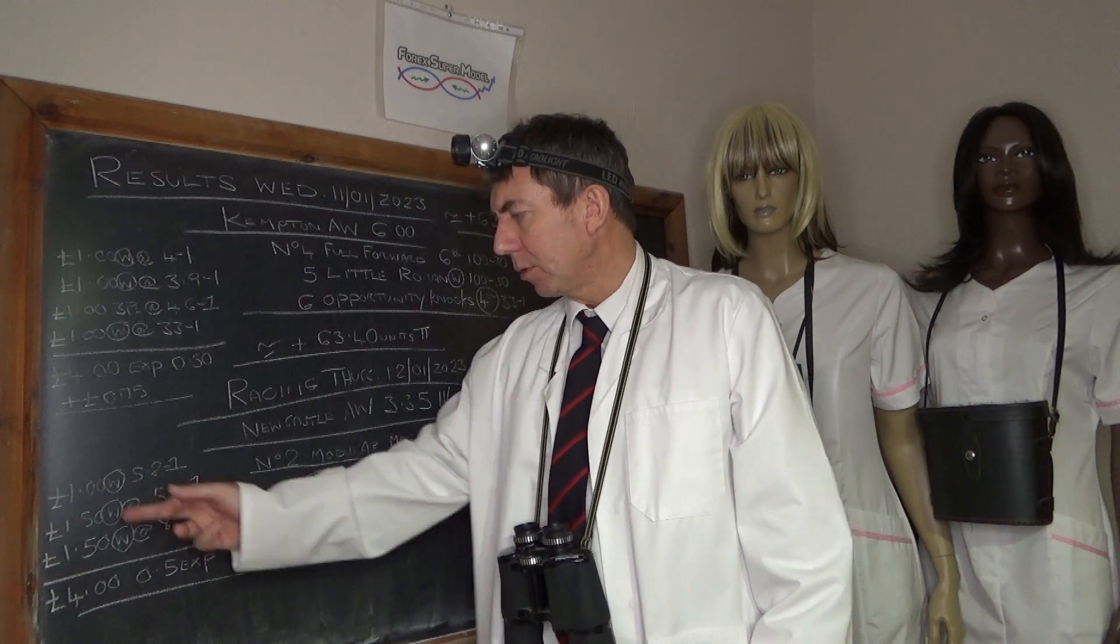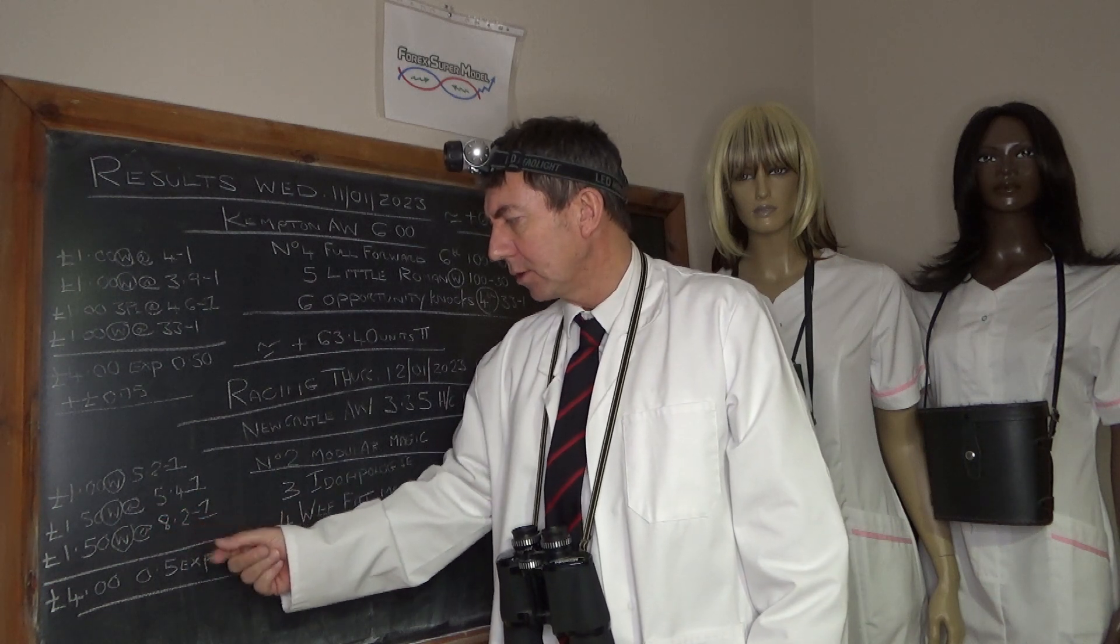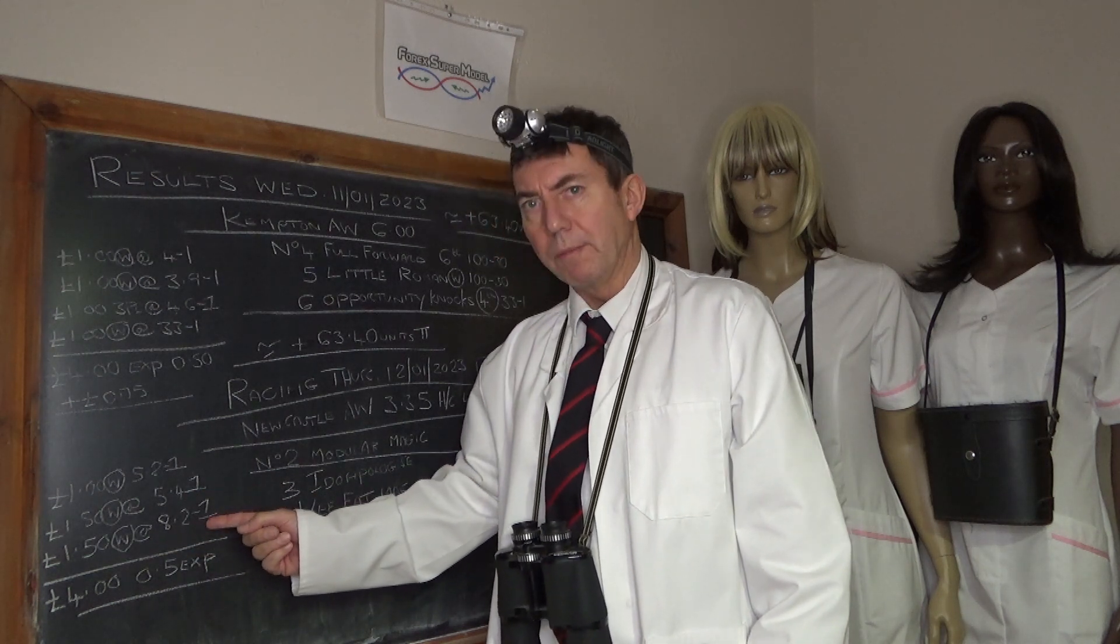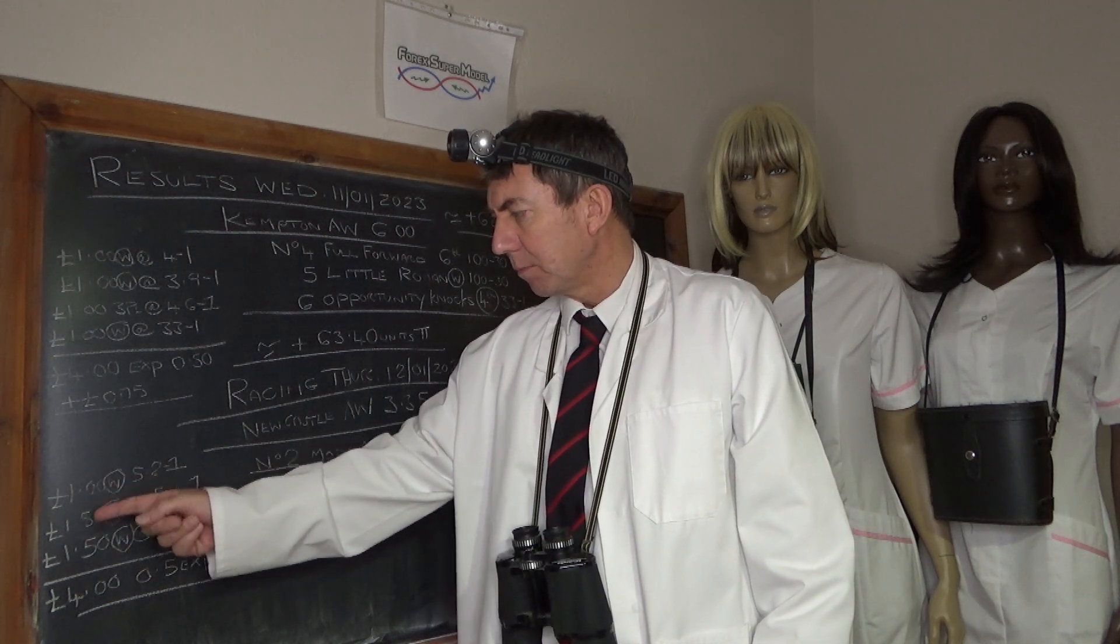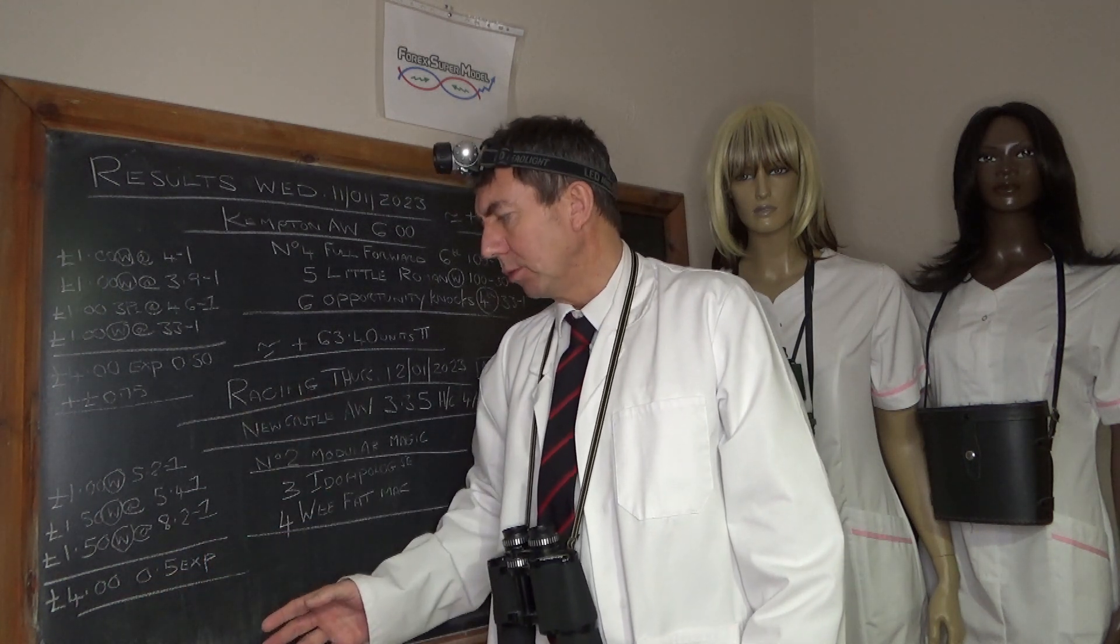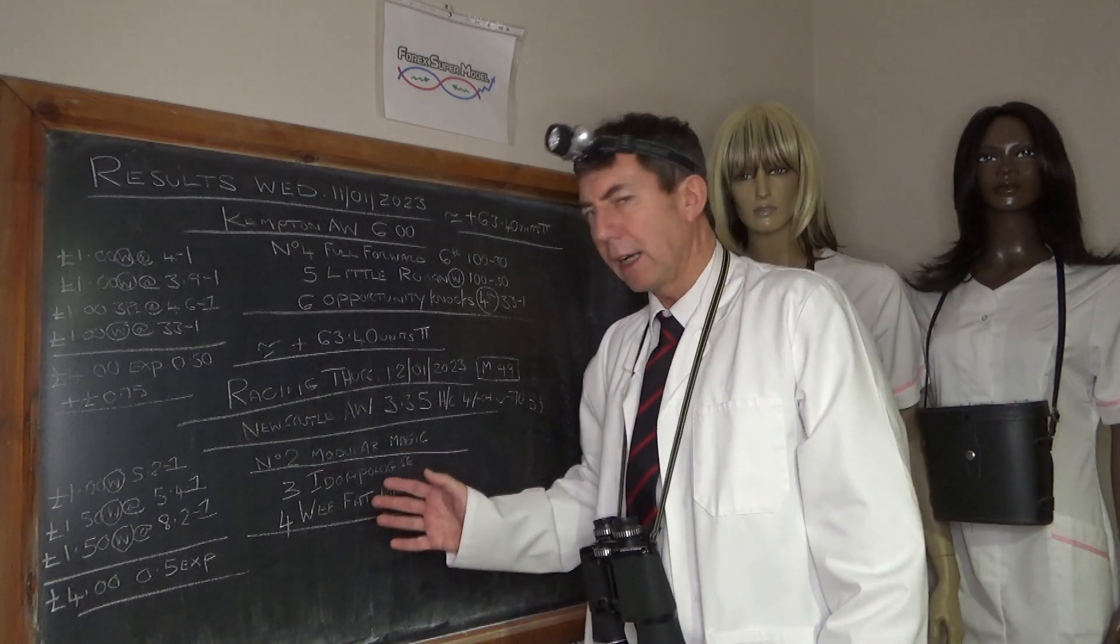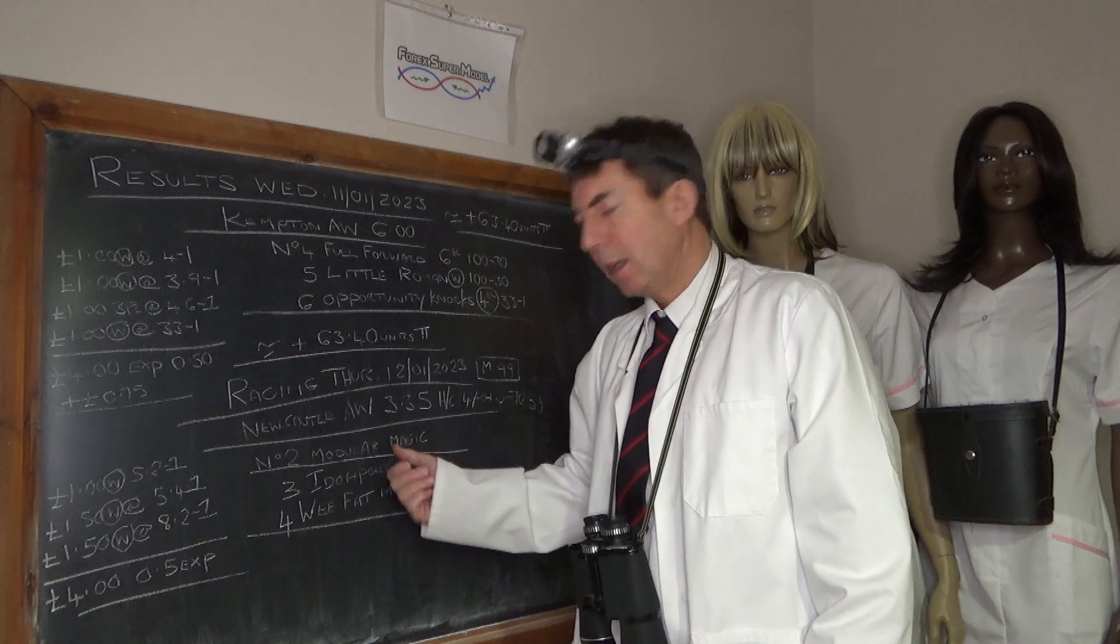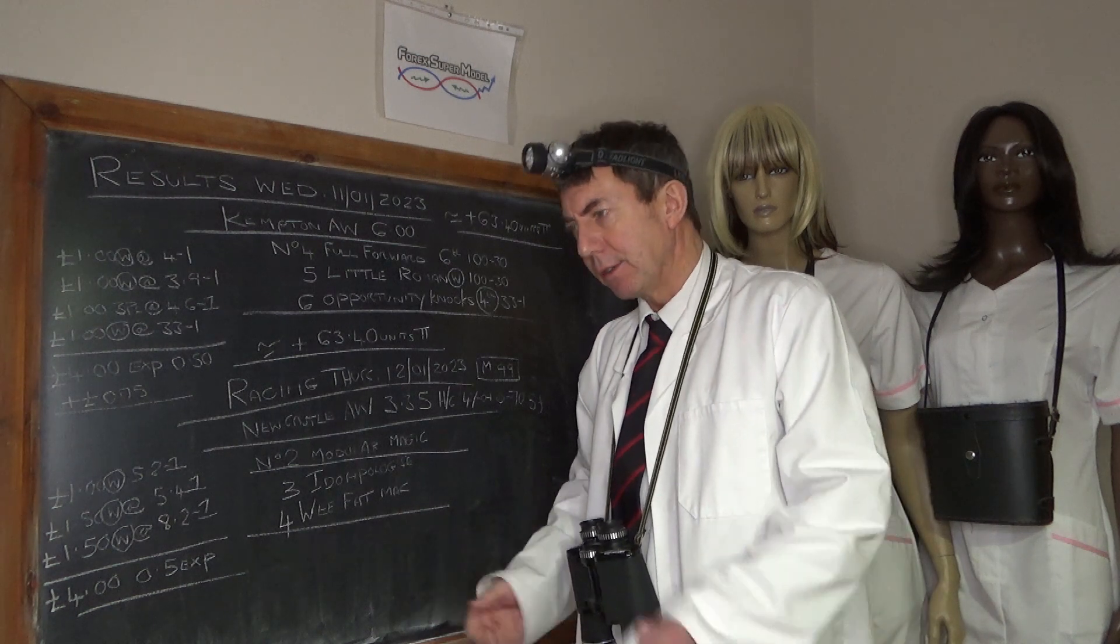So we've put slightly more on these two for that basis. We've got 150 to 153 pounds and plus a pound is four pounds per eight pound unit which is half a unit exposure which is 400 pounds for us. So that's where we are. That's what we think is going to happen. We think you're either going to get this Modular Magic running the guts out of them and winning or it's going to set it up for I Do Apologise or WeFat Mac and the others.